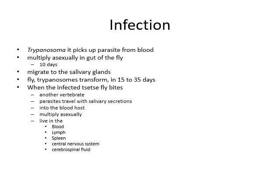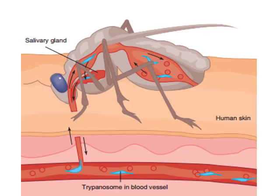Here is the tsetse fly with Trypanosoma. The salivary glands are shown, and Trypanosoma is in the blood vessels. If the tsetse fly bites a human, the Trypanosoma moves from the salivary gland into the blood vessels of the host.